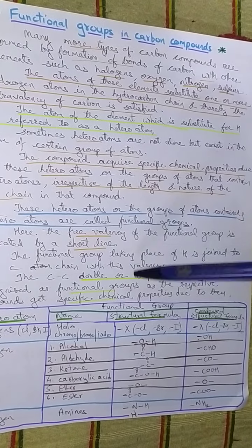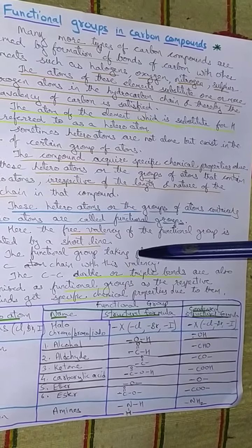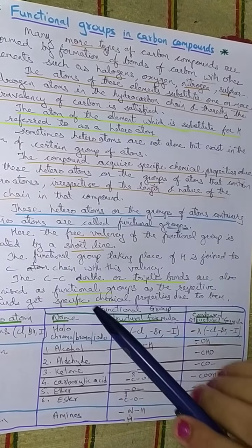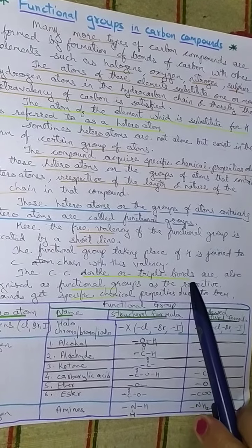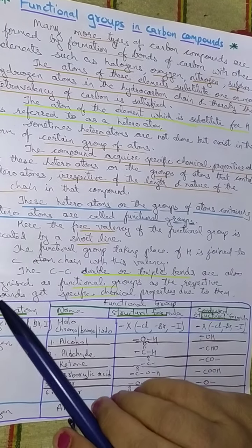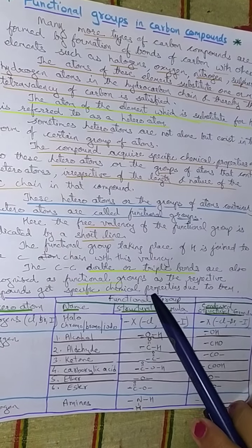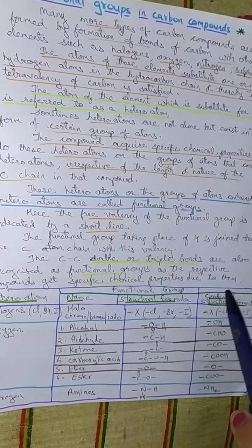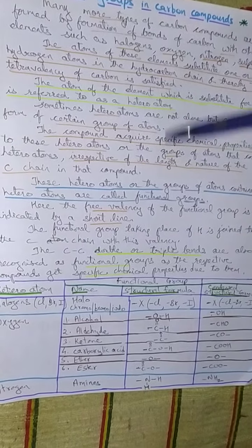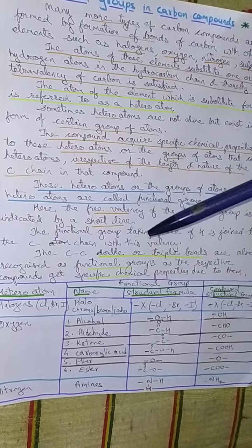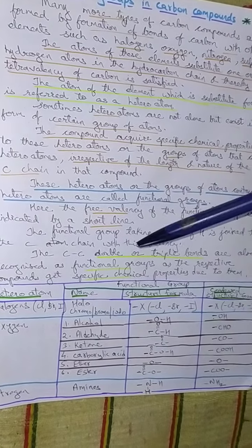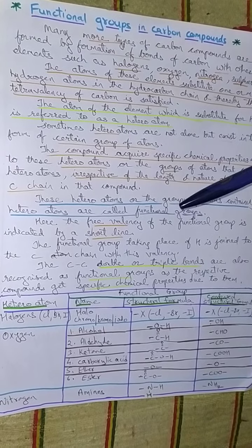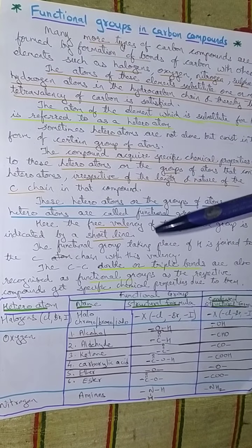In addition to heteroatom-based functional groups, the carbon-carbon double bond and the carbon-carbon triple bond are also recognized as functional groups, as the respective compounds give specific chemical properties due to them. The double bond or triple bond changes the chemical properties and also adds to the diversity of carbon compounds.